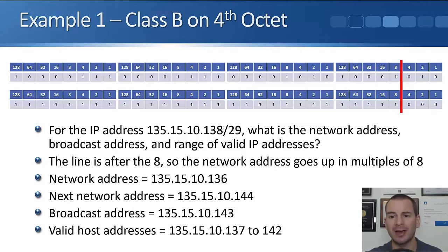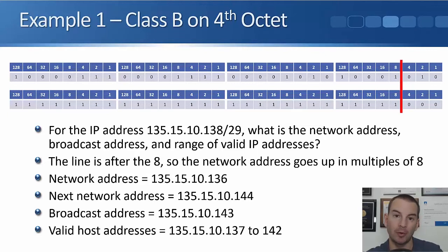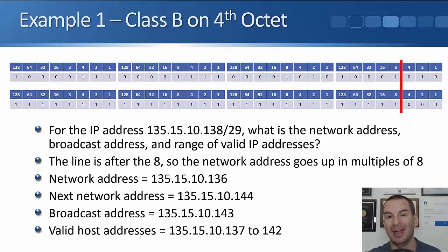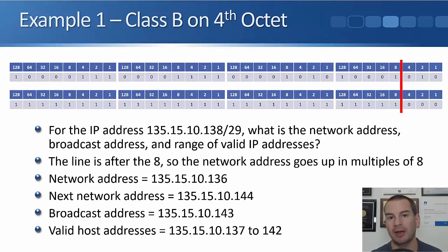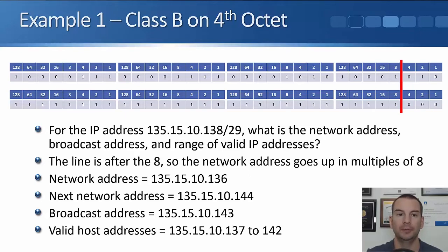The line is after the 8, so we add 8 to 136. The next network address would be 135.15.10.144. And if the next network address is 144, then the broadcast address must be 135.15.10.143. The valid addresses for our hosts fall between the network address and the broadcast address: so that's 135.15.10.137 up to 142.